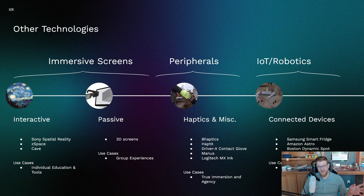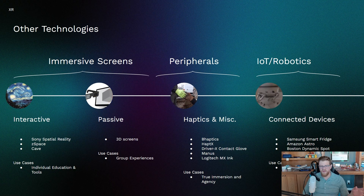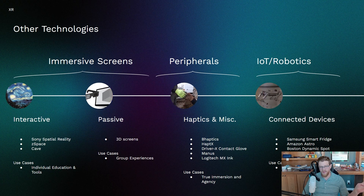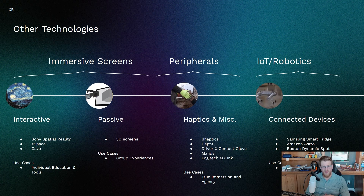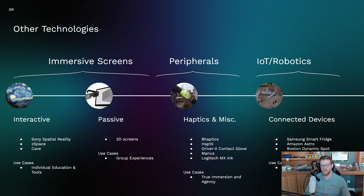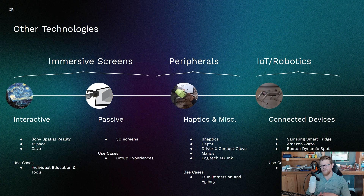Then there are some other technologies to be aware of. You have immersive screens. You have interactive screens like Sony's Spatial Reality, ZSpace, and the cave that some of you have probably seen. Use cases here usually fall into educational and tooling. Then you have passive immersive screens — basically a passive 3D monitor or 3D screen.